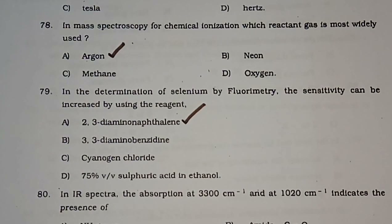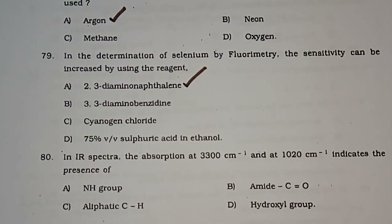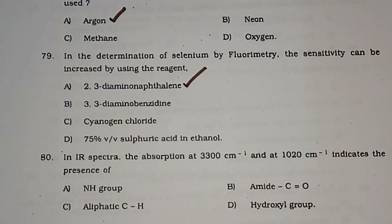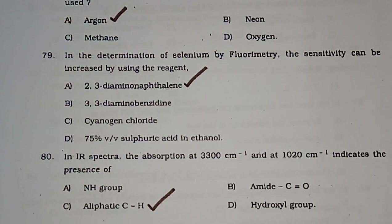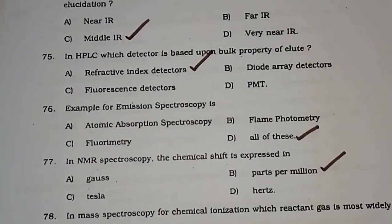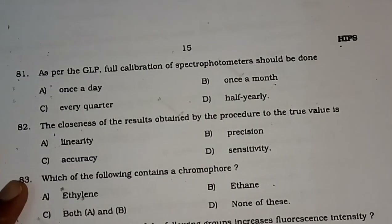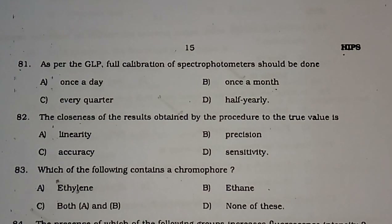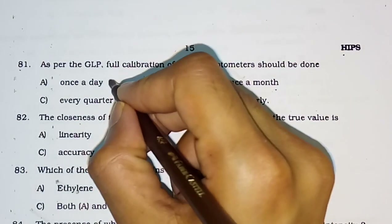Question number 80: In IR spectra, absorption at 3300 cm⁻¹ and at 1020 cm⁻¹ indicates the presence of — NH group with amide C=O, aliphatic C-H, hydroxyl group, or aliphatic C-H. Question number 81: As per GLP, full calibration of spectrophotometers should be done — once a day, once a month, every quarter, or half-yearly. The correct answer is once a day.